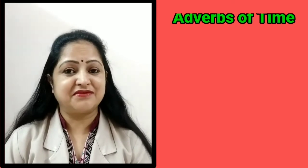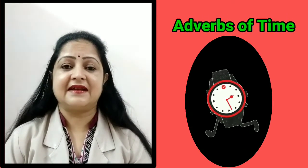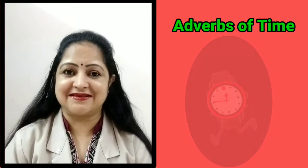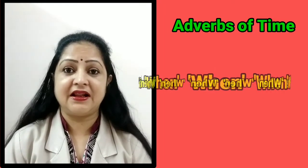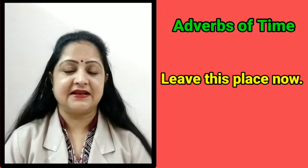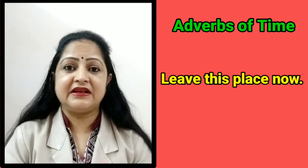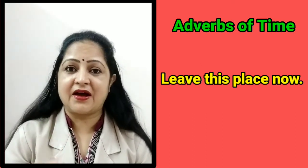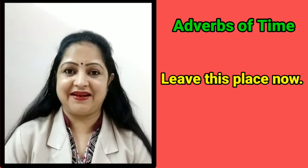The first type of adverb is adverbs of time. Adverbs of time tell us something about the time an action happens. They can answer the question 'when.' For example: leave this place now. Here, the question is when to leave the place — the answer is 'now.' So 'now' is the adverb of time, telling us the time of leaving the place.